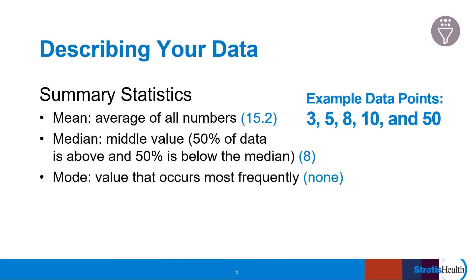The mode is the value that occurs most frequently. Our data set of 3, 5, 8, 10, and 50 has no mode, as each number occurs once. If our data set were 3, 3, 5, 8, 10, and 50, then 3 would be our mode, as it occurs most frequently in that data set.